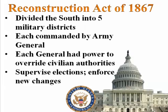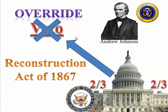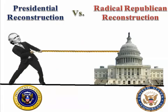When they passed the Reconstruction Act of 1867, they sent it to President Andrew Johnson — he vetoed it again. Congress then overrode his veto a second time by two-thirds vote of both houses. We see here the tug-of-war going on between President Andrew Johnson and the Radical Republicans in Congress.